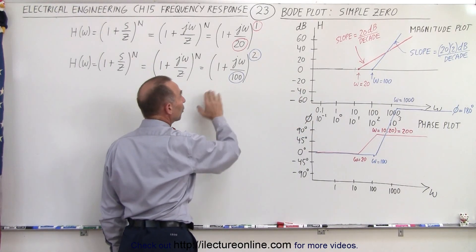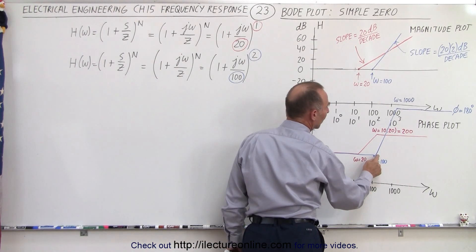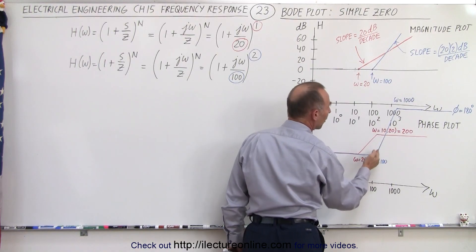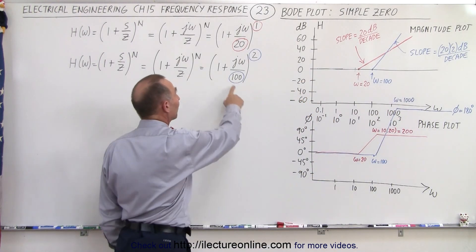Now for the double zero, notice again it begins at omega equals 100. It goes all the way to omega equals 10 times 100, or a thousand, but now the phase angle will be twice the 90 degrees because we have a double zero.